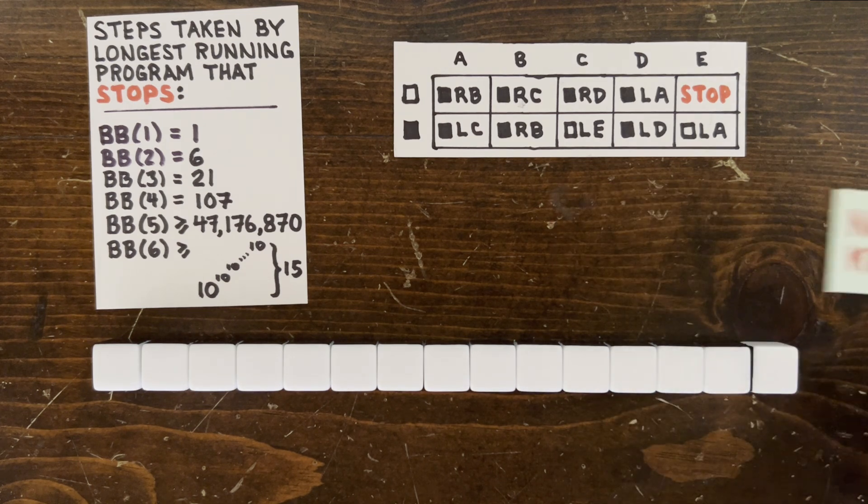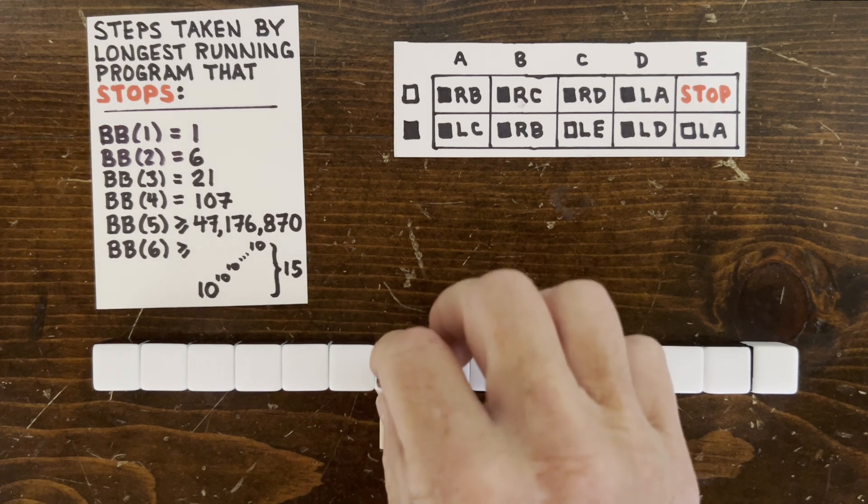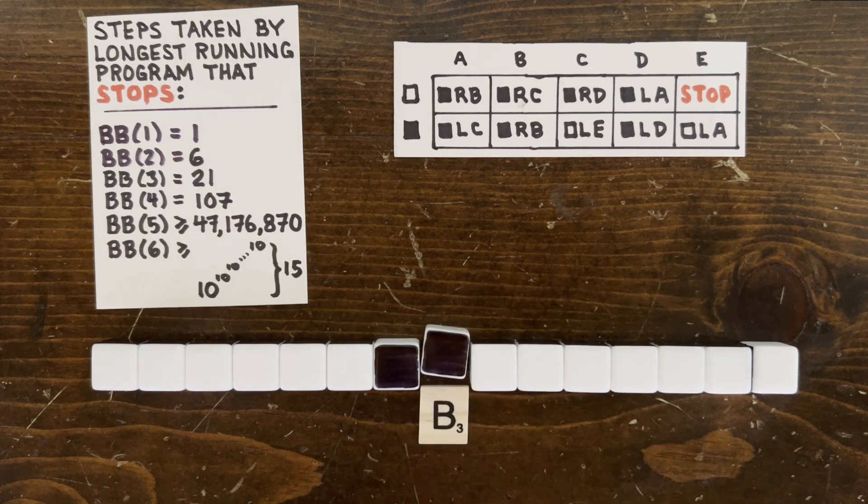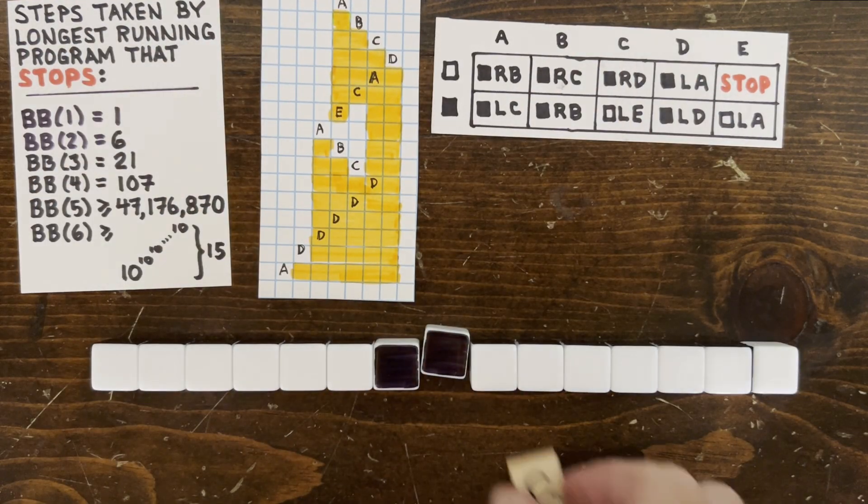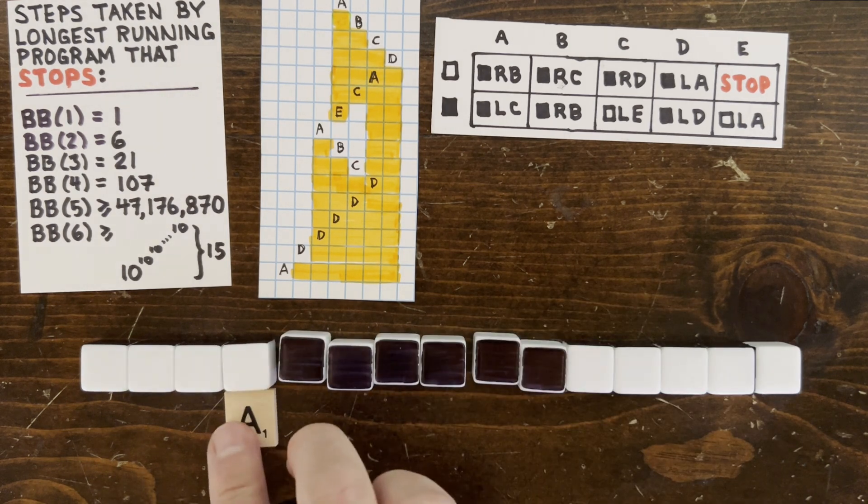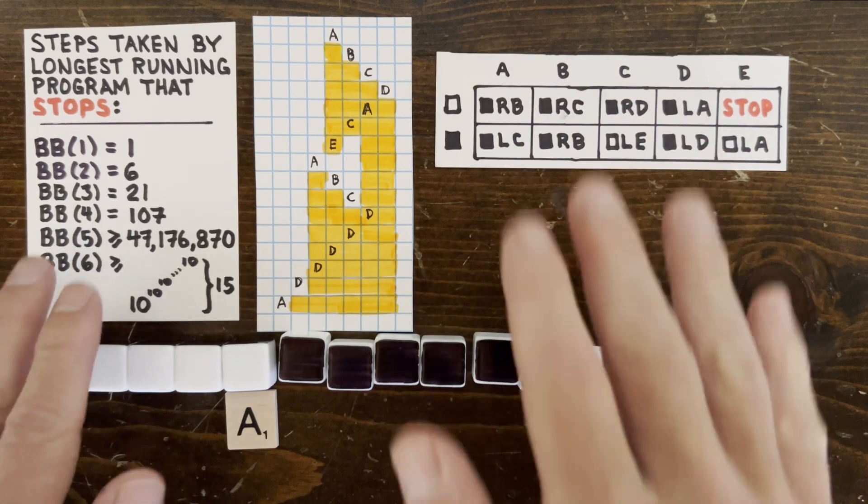So let's run the current champion. Starting from state A on a blank tape, we turn that cell black, move to the right into state B, then turn that cell black and move to the right into state C, and so on and so on. And eventually, after 15 steps, we're here with six black cells. And then after 47 million more steps, the machine will completely stop.